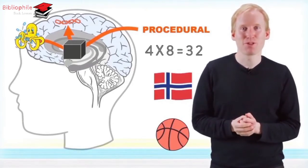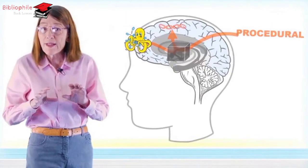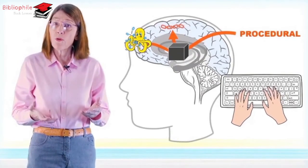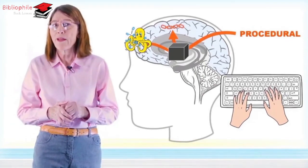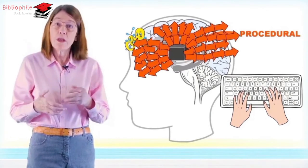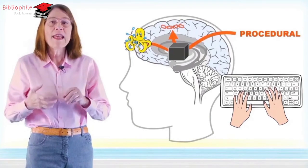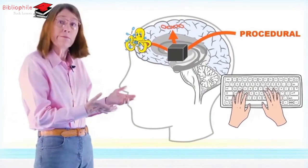The procedural system is even what you rely on to type on a keyboard. This system is slow to learn. After all, that black box has to have lots of inputs and outputs in order to learn. But once it's learned something, it can be very fast to react. That's why you can type so quickly.